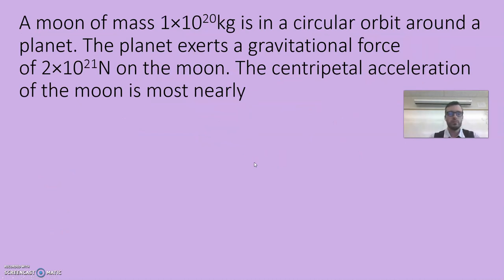A moon is in circular orbit around a planet. The planet exerts a gravitational force of this on the moon. The centripetal acceleration of the moon is most nearly. Well, we have Fg equals our normal equation, GMm over r². What we can do here to find this centripetal acceleration is we can think of this idea that Fg equals Fc, which means it's equal to mac.